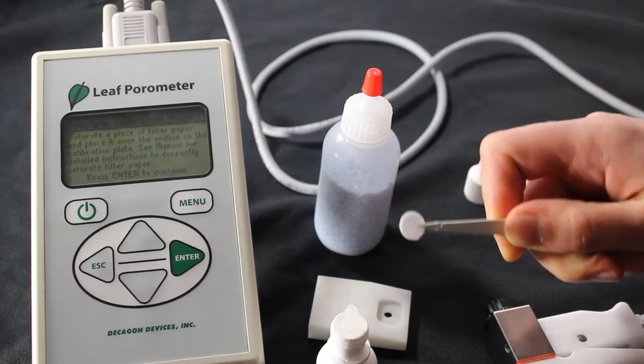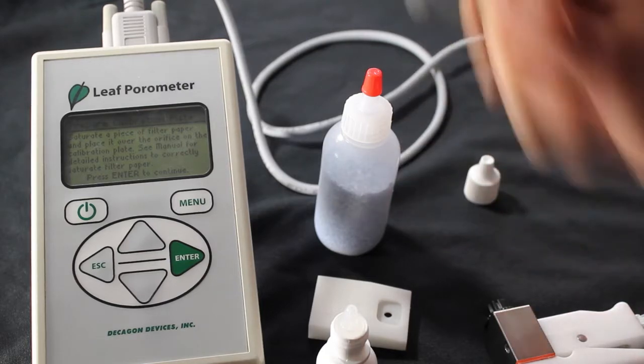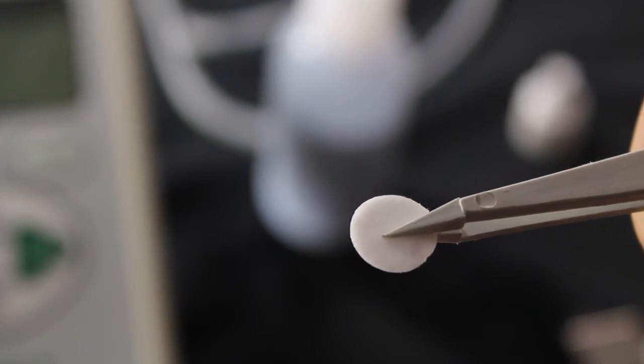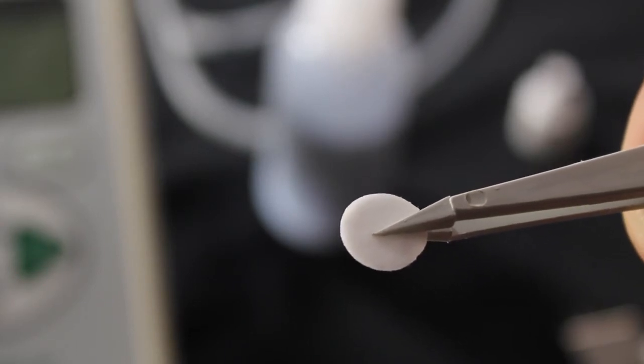The best method of ensuring proper wetness of the filter paper is to use the wet and flick method. The resulting paper should glisten, but there should be no drop of excess water clinging to the disk.